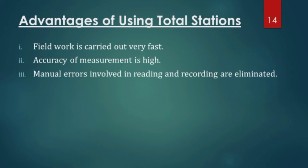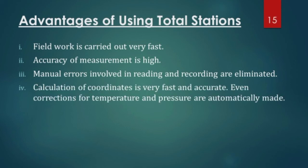Manual errors involved in reading and recording are eliminated. Suppose you are taking an area of a cross traverse, you will be measuring all the sides and angles and you will be calculating it manually. So in total station, you just need to traverse it by its own procedure and total station will give directly the area by itself. You need not calculate anything by your own, hence manual errors are eliminated. Also calculations of coordinates is very fast and accurate, even corrections for temperature and pressure are automatically made by total station itself. If you have other accessories and other add-on instruments with it, you can get its precision and quality of values even higher.